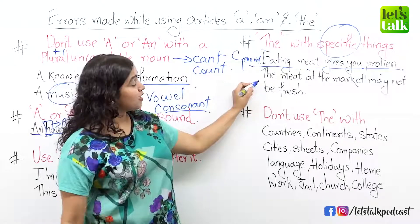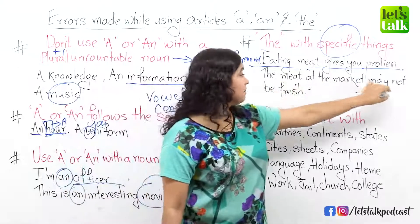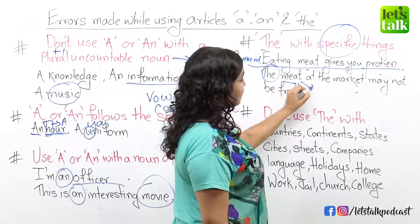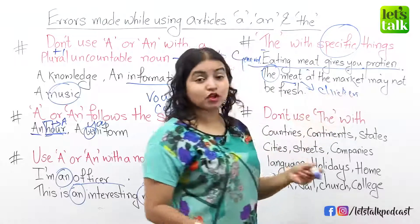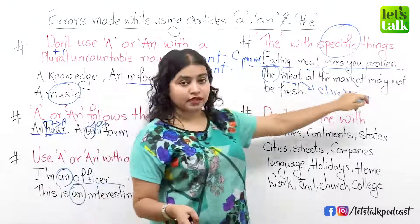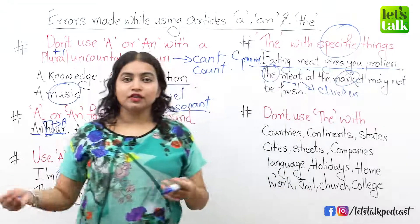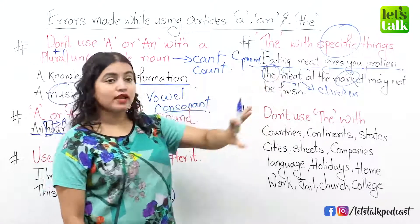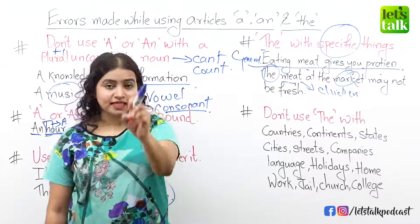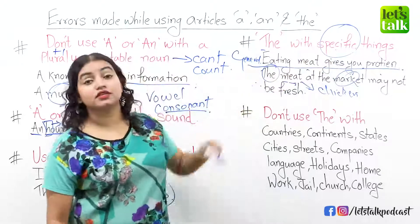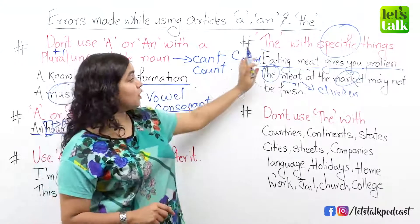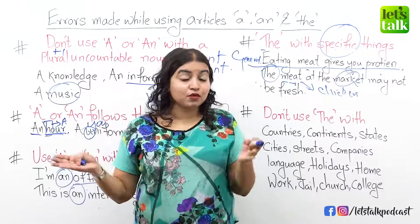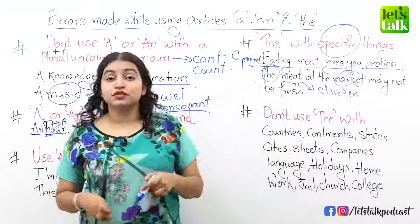But when you are being very specific about a noun, whether countable or uncountable, that is when you use the. For example: "The meat at the market may not be fresh." Here we are talking about specific meat — it could be chicken, beef, or anything — at a specific market, perhaps a supermarket near your house or workplace. We are specifying the noun, pinpointing a particular thing, and therefore we use the article the.